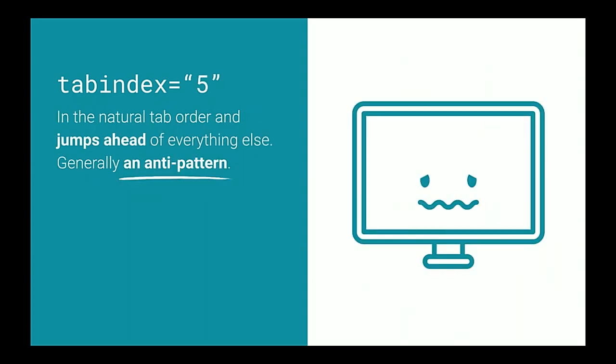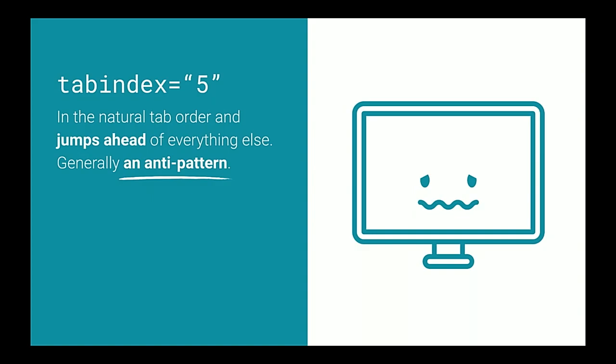You can also have a tabindex value greater than 0 — like 5 or 10 — which jumps that element in front of everything else in the natural tab order. In general, this is considered an anti-pattern, because it's very easy to tie yourself in knots and end up with crazy focus jumping all around the page. It's also a little strange for screen reader users, who tend to navigate the DOM in a linear fashion. So tabindex greater than 0 is a thing, but it's an anti-pattern — you probably never, ever want to do it.